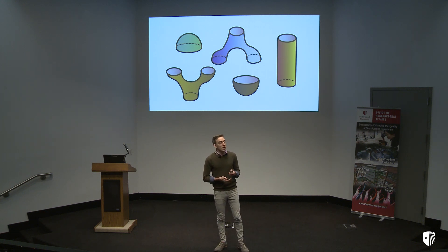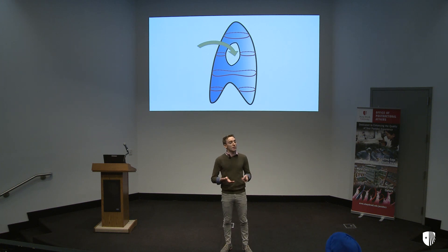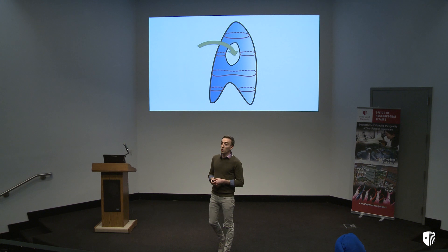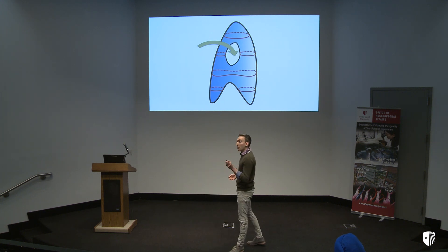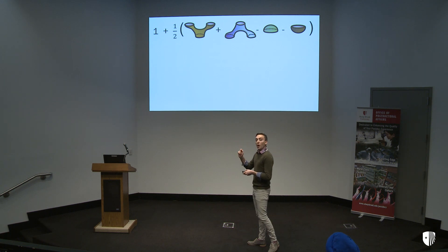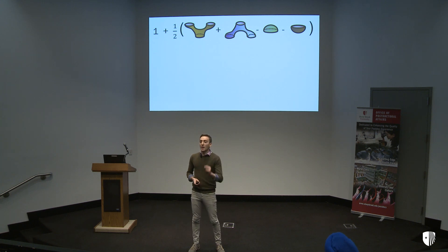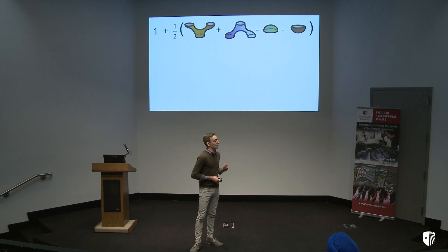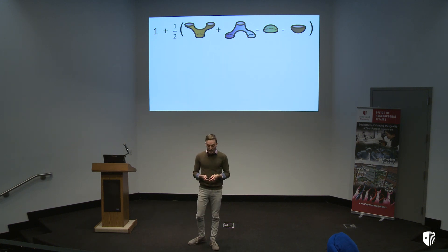So what, you might ask? Well, it turns out that these pieces have a lot of information. You might notice that the surface I drew before had one hole going through it. And you can ask: given the pieces and how they glue together, is there a way I could have known there was going to be one hole? It turns out there's actually a formula for the number of holes. If I take one plus a half times the quantity — count the number of orange pieces, add the number of purple pieces, subtract the number of green pieces, and subtract the number of brown pieces — then I get the number of holes.